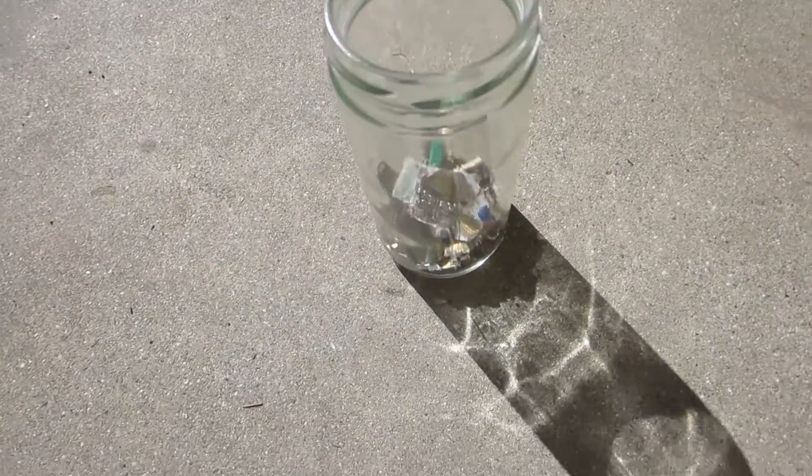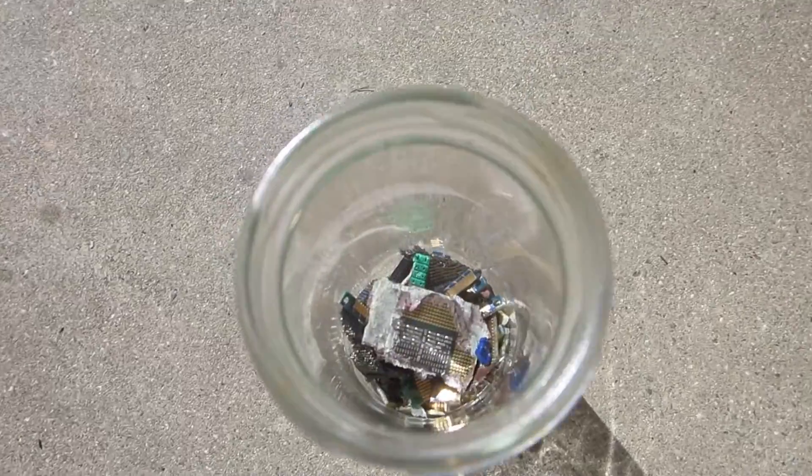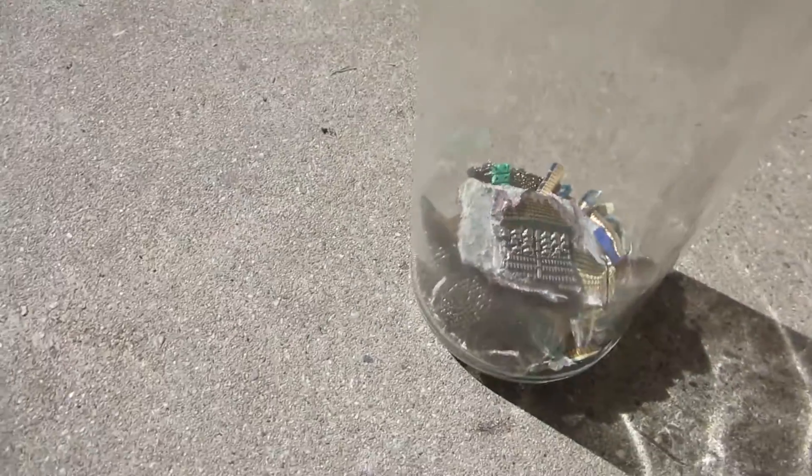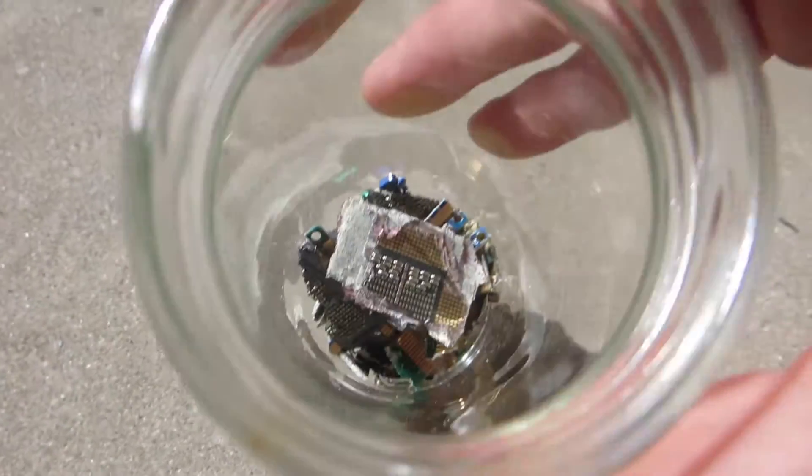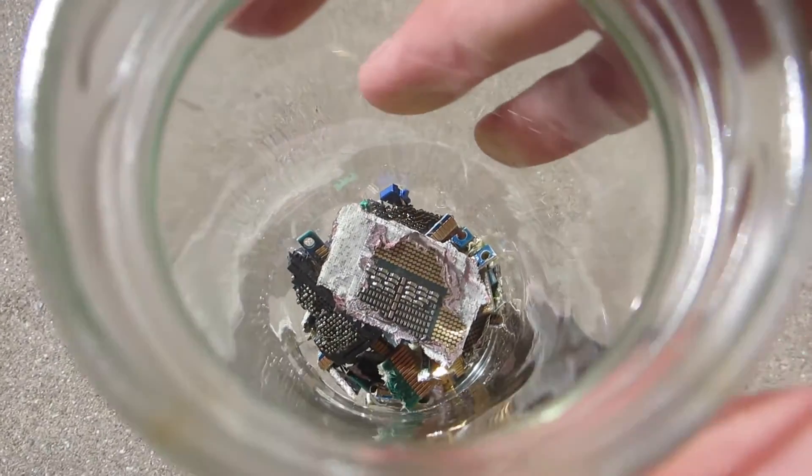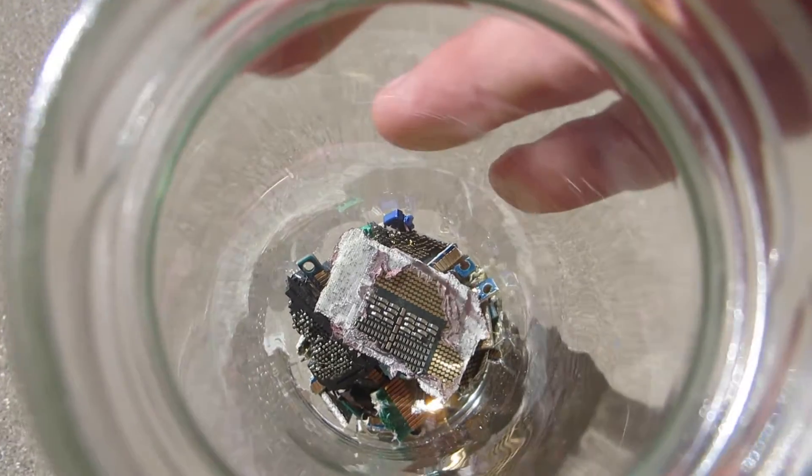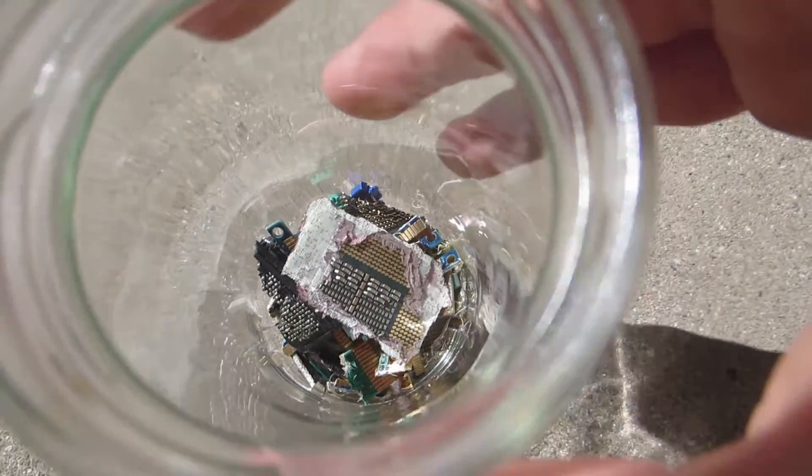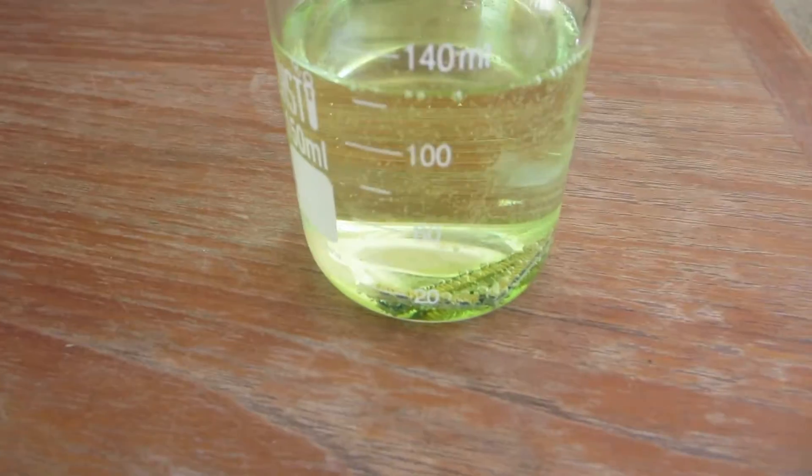We're going to extract gold from computer chips. Here are the gold-containing chips found so far. We're going to dissolve the copper in a mixture of hydrochloric acid and hydrogen peroxide.